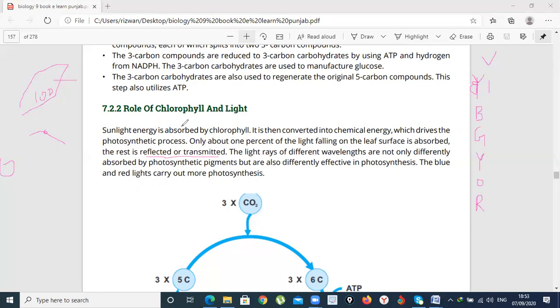The light rays of a different wavelength are not only differently absorbed by photosynthetic pigment but also differently effective in photosynthesis. Now if we are talking about light, the most photosynthesis occurs with blue and red light. Blue and red light carries more photosynthesis. Chlorophyll absorbs which light? Blue and red light.